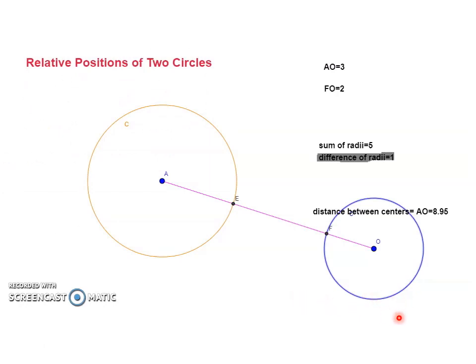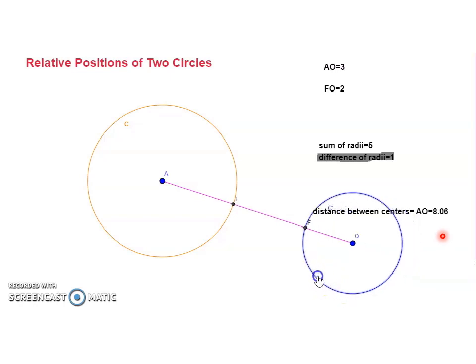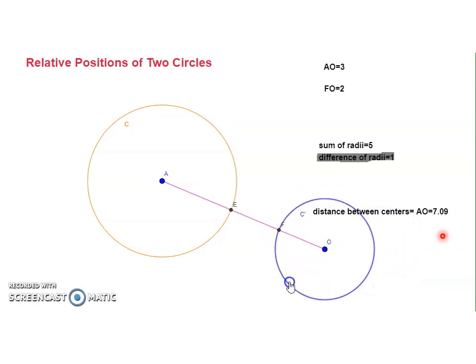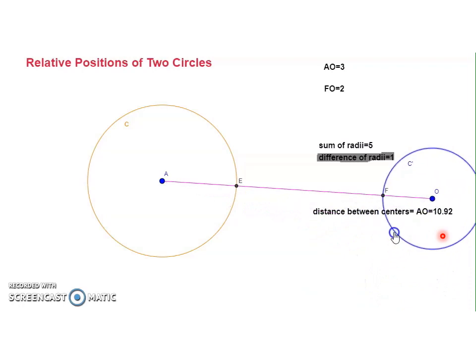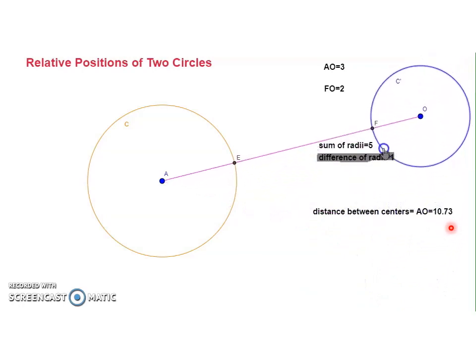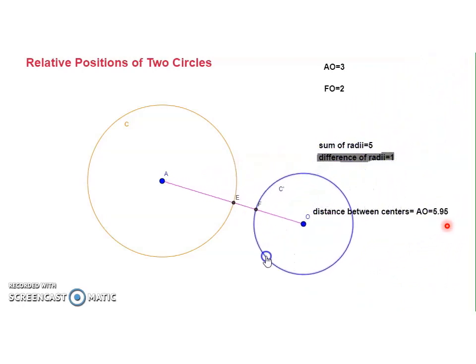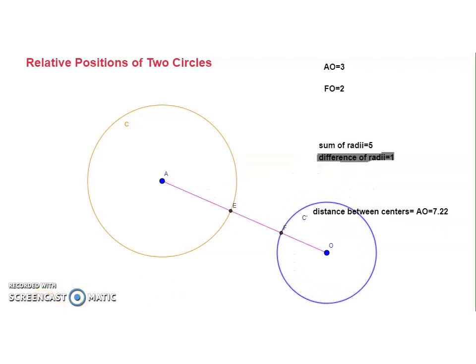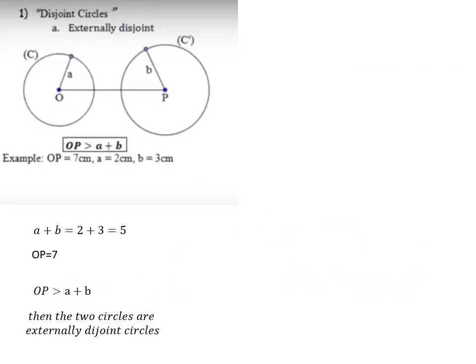Here is a simulation representing externally disjoint circles, where we can see the distance between the two centers is always greater than the sum of the radii. No matter how I move the circle, they remain externally disjoint — this distance is always greater than 5.